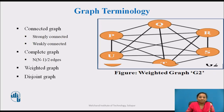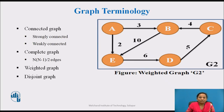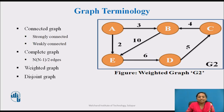Weighted graph: A graph is said to be a weighted graph if every edge in the graph is assigned some value. In a weighted graph, the edges are assigned some weight or length. The weight of an edge is a positive value indicating the cost of traversing that edge. This diagram shows a weighted graph where values are assigned to each edge.